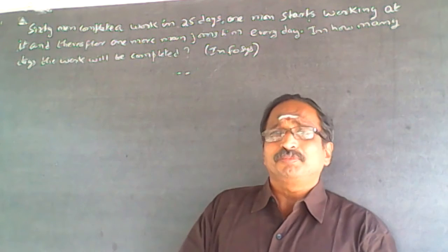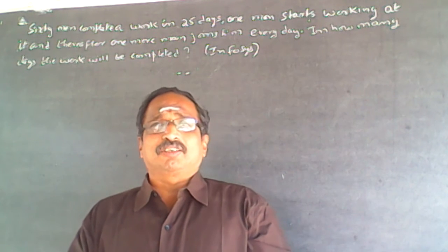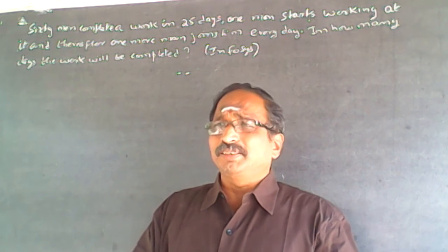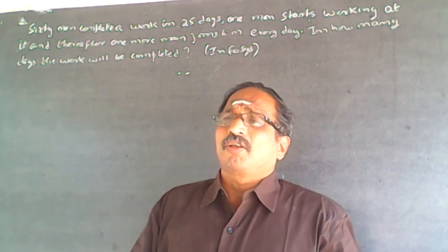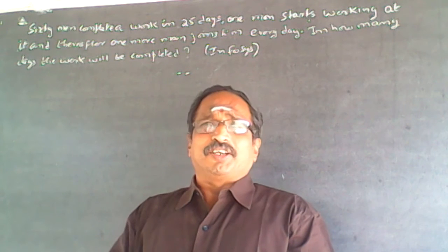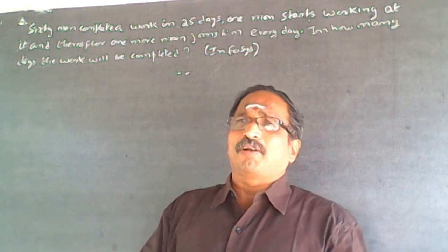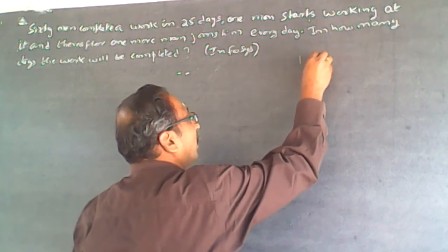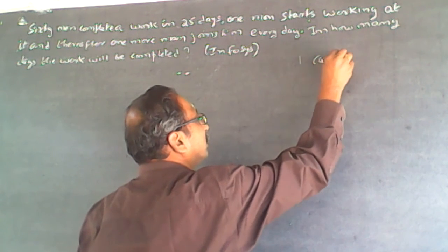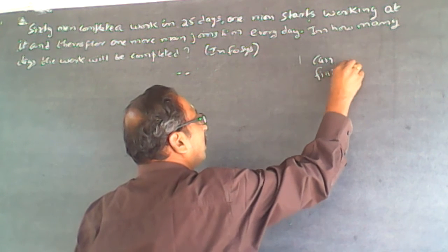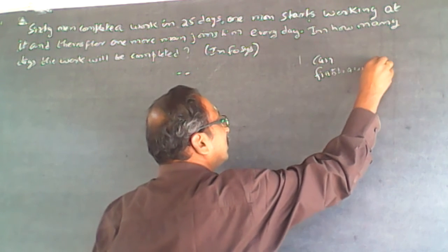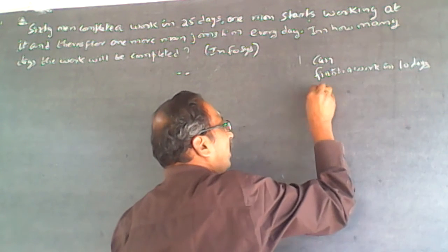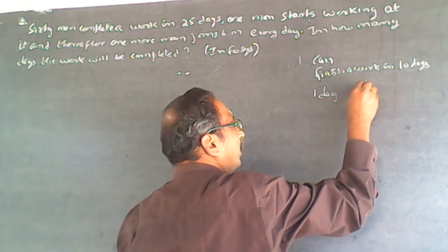This is a time and work concept problem. You have to consider work as a single unit. For example, if one person can finish a work in 10 days, then in one day they will do 1/10 of the work.